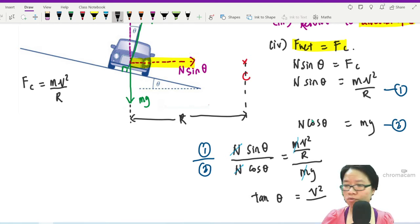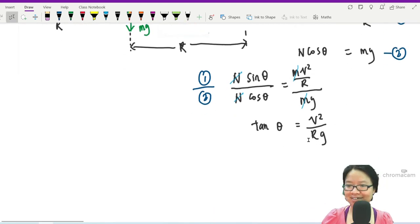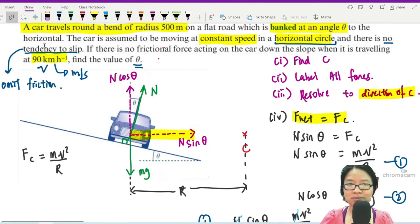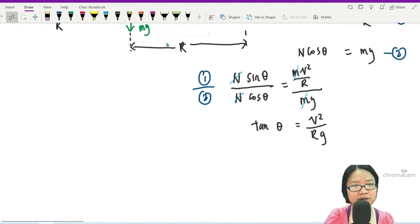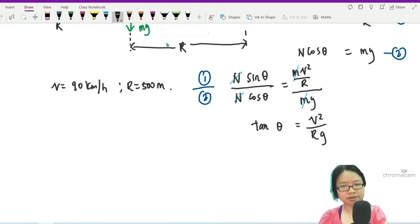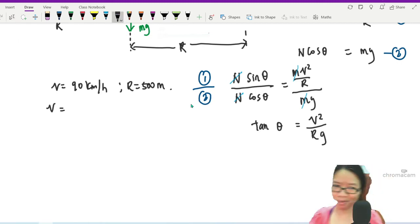Like that. Do we have v? Yes we do, v is 90 kilometers per hour. Do we have r? 500 meters. Can we substitute? I'll write here: v equals 90 km/h and r is 500 meters. Unfortunately this thing ain't in meters per second, so we've got to convert a bit.